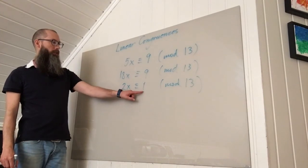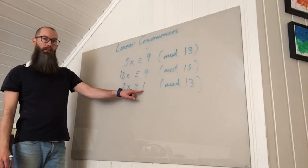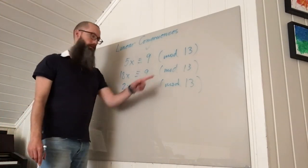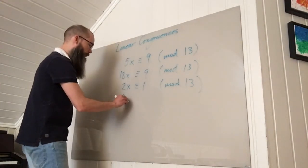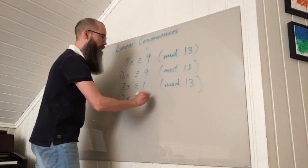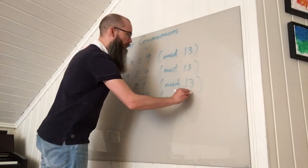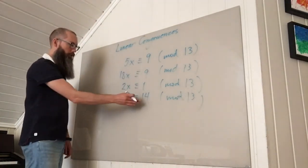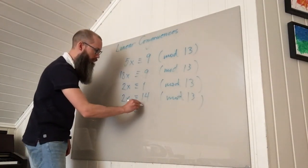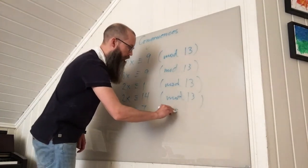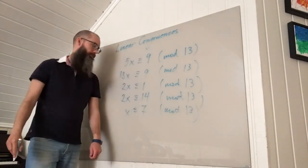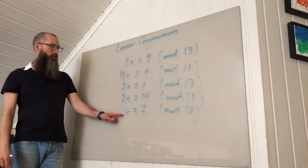Now I can replace 1 by 14 because 1 and 14 are congruent mod 13. So 2x is congruent to 14 mod 13, and then I can divide by 2 to get x congruent to 7 mod 13. So that's the solution.